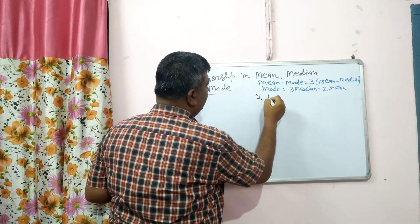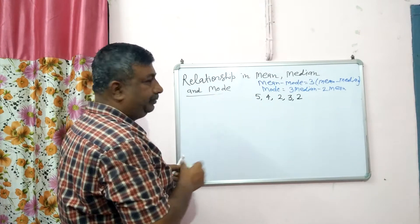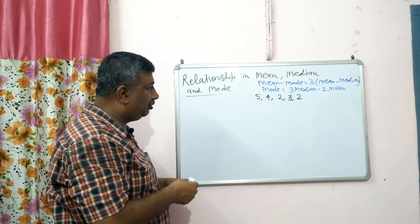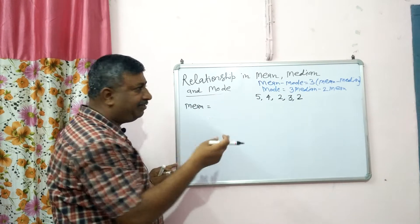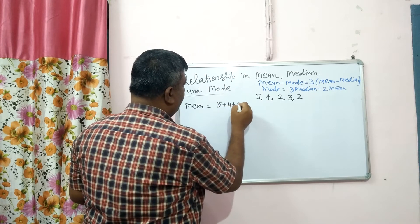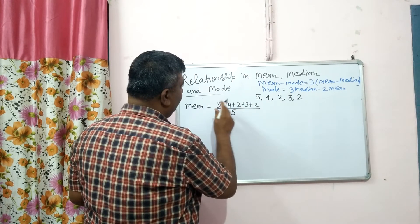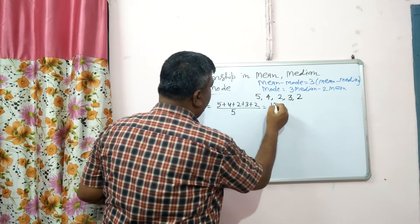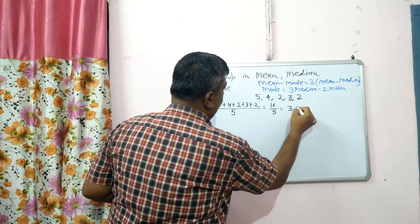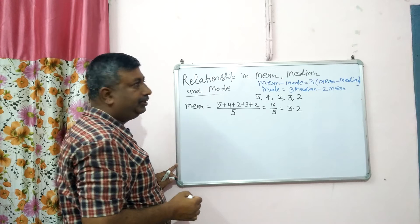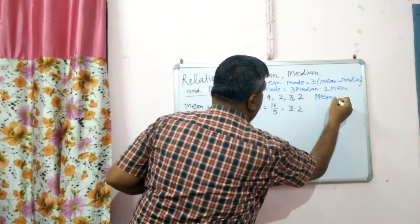Suppose a data set is marks of a student in 5 tests: first test 5 marks, second test 4 marks, then 2 marks, then 3 marks, then 2 marks. So mean = (5 + 4 + 2 + 3 + 2) / 5 = 16 / 5 = 3.2. So mean is equal to 3.2.